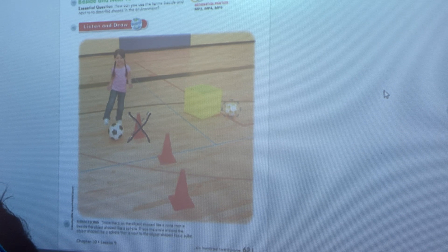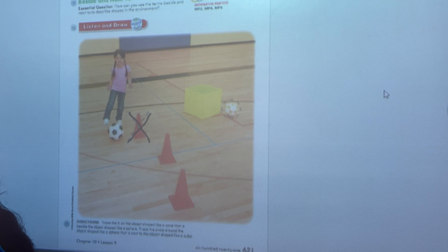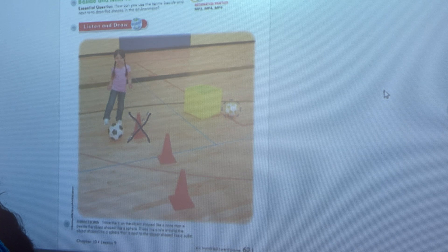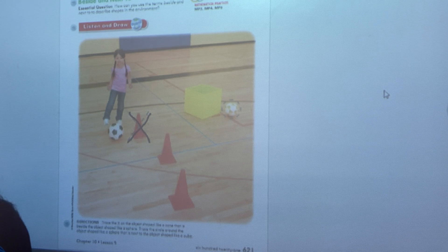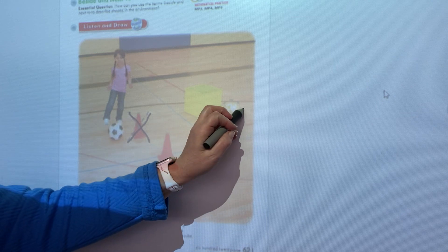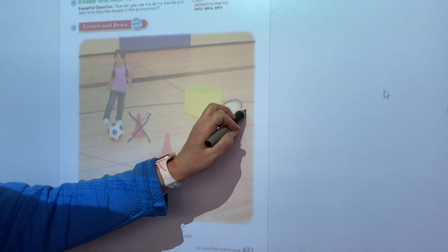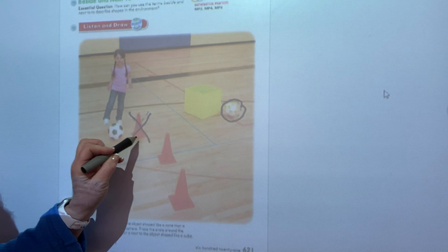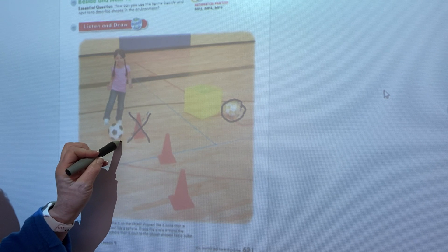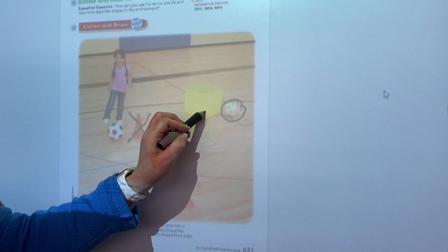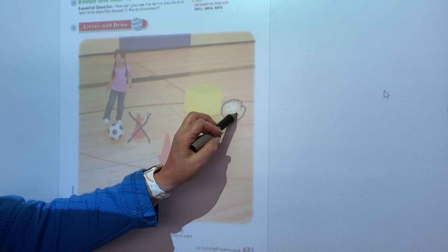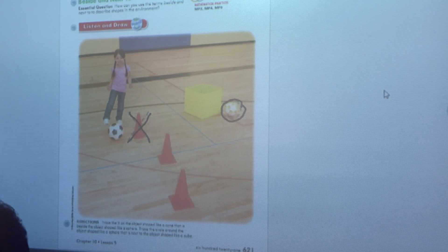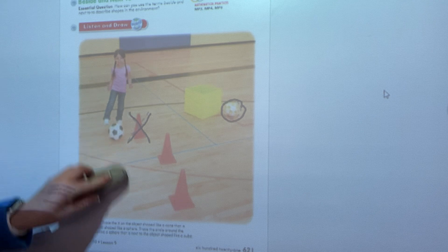I would like you to trace the circle around the object like a sphere that is next to the object shaped like a cube. So we're going to circle that sphere. And like they said, this sphere is next to the cone or beside the cone. This cube is next to or beside the sphere. Let's see how we do. We'll go on to the next page.